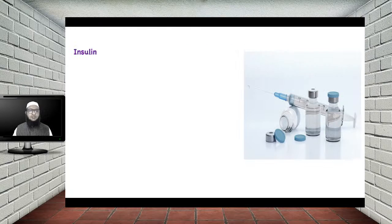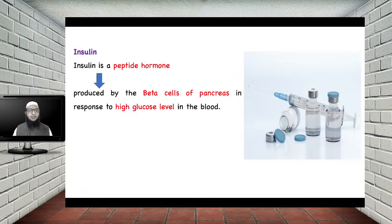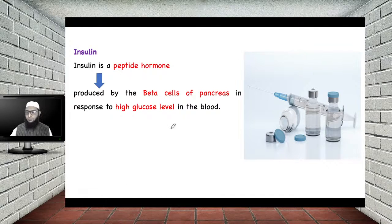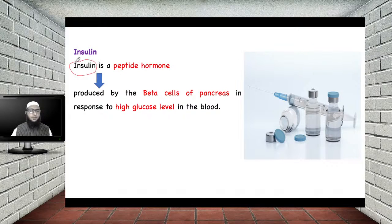Let us first see what we mean by insulin. Insulin is a peptide hormone produced by the beta cells of the pancreas in response to high glucose levels in the blood. Whenever there is high blood glucose level — that is called hyperglycemia — there is release of insulin to control this blood glucose level.